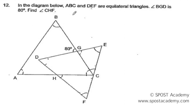So they say that ABC and DEF are equilateral triangles. ABC is an equilateral triangle which means that this is 60, 60, 60 degrees here. And triangle DEF is also an equilateral triangle, so this is also 60, this is also 60, and this is 60 degrees.